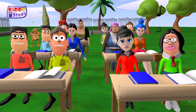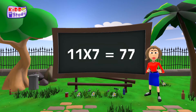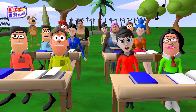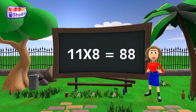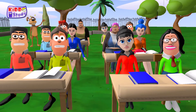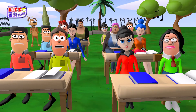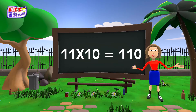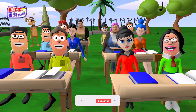11 sixes are 66. 11 sixes are 66. 11 sevens are 77. 11 sevens are 77. 11 eights are 88. 11 eights are 88. 11 nines are 99. 11 nines are 99. 11 tens are 110. 11 tens are 110.